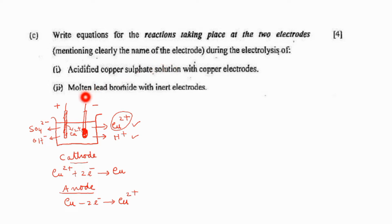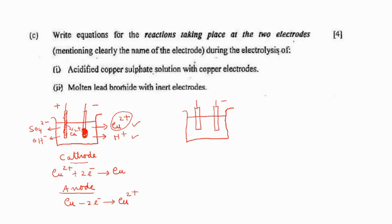Next: molten lead bromide with inert electrode. Draw an electrolytic cell of molten lead bromide — this is the cathode and this is the anode. The electrolyte is molten lead bromide. As it is molten, the only cation present will be Pb²⁺ ion and the only anion present will be Br⁻ ion.